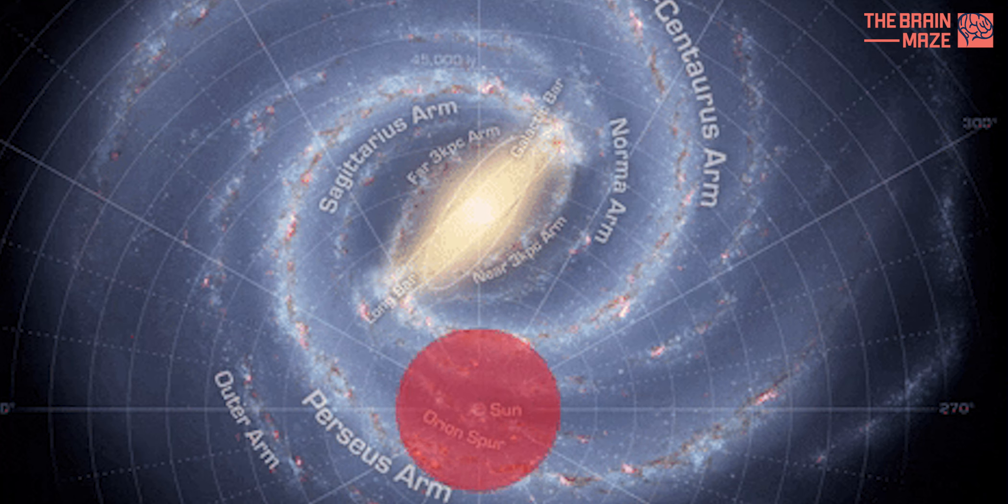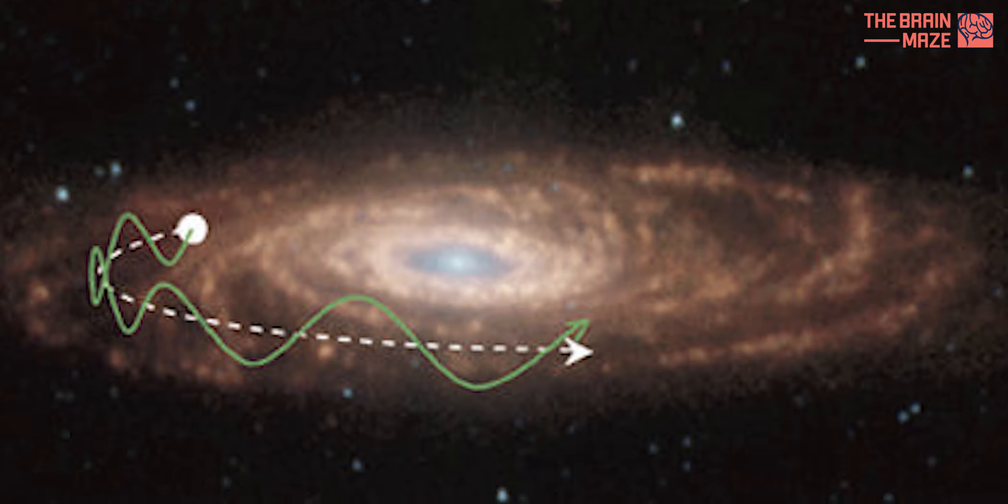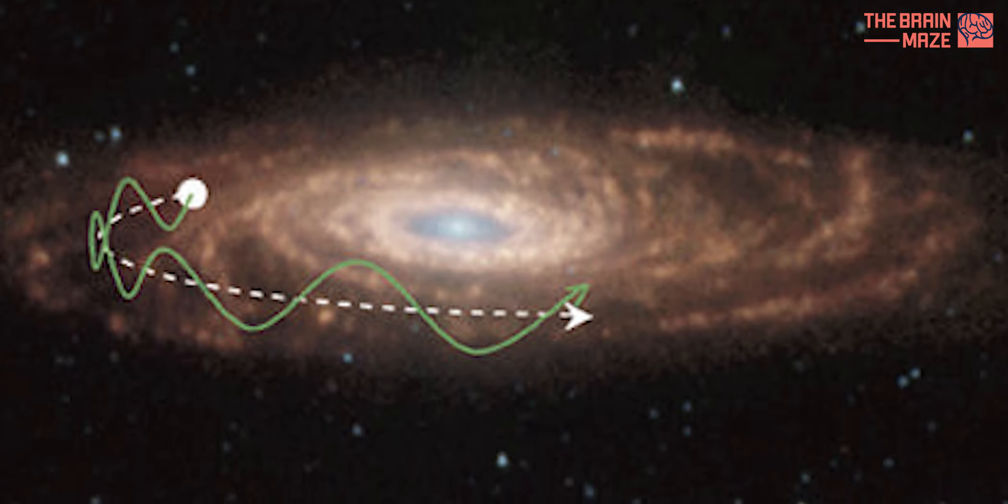While this path appears circular when viewed from above, it's not entirely flat. The Sun actually bobs up and down through the galactic plane, completing this cycle every 60 million years.